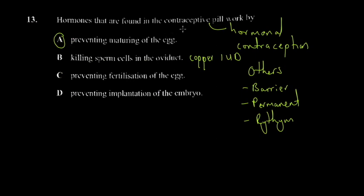Hormonal contraception typically uses estrogen and progesterone in specific proportions — often synthetic versions of these hormones — to suppress ovulation. A brief history: scientists discovered that taking hormones from pregnant rabbits and injecting them into female rabbits prevented pregnancy. They realized you can manipulate the menstrual cycle for desirable results. The best answer for the exam question is that hormonal contraception works by preventing the maturing of the egg.